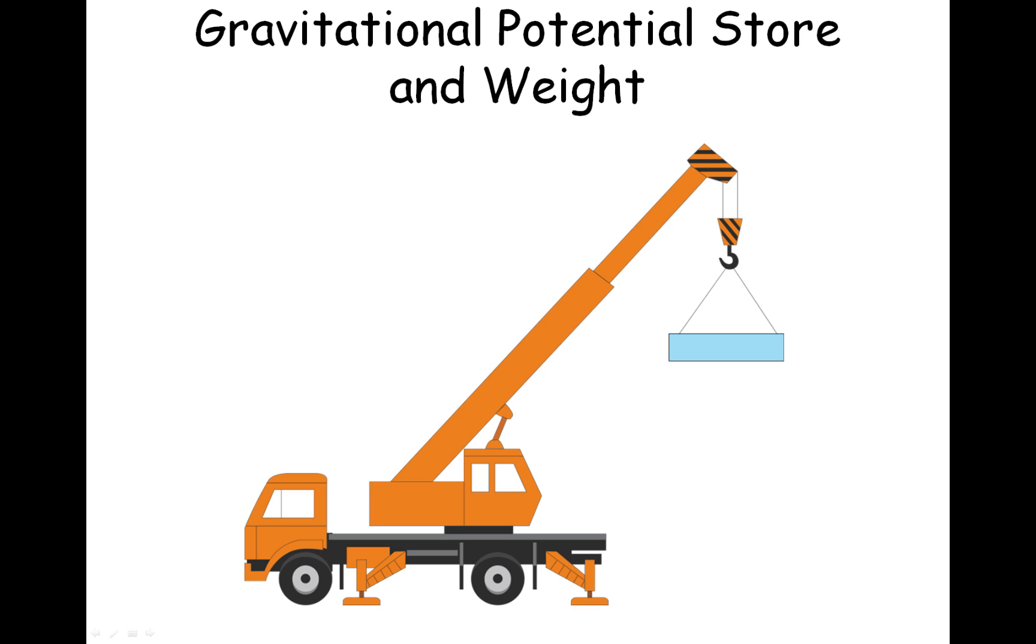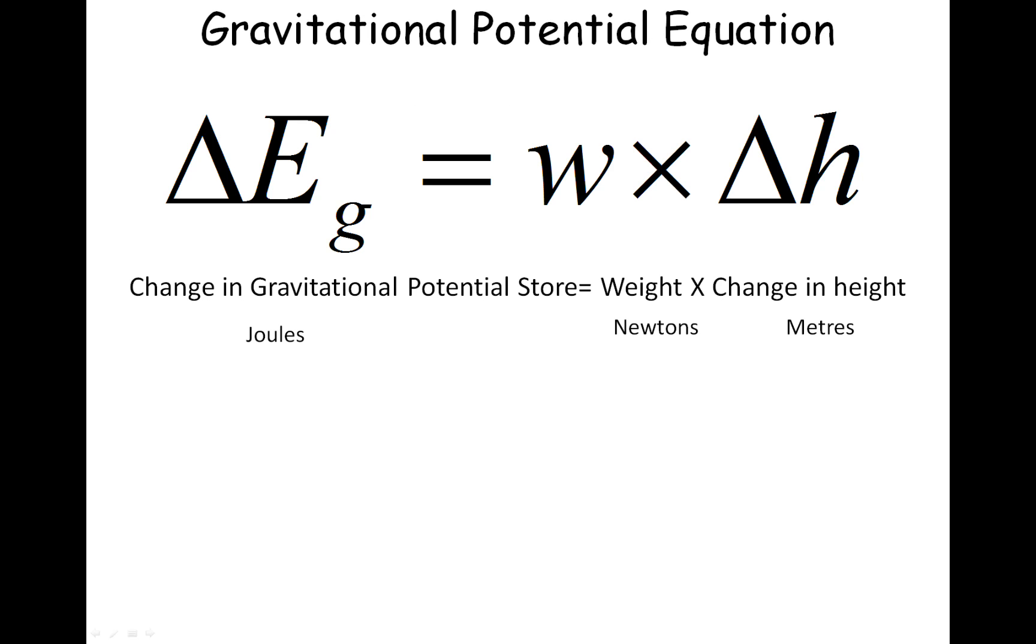So let's start by looking at the equation. On the left hand side we have delta EG, where that triangle symbol is a Greek letter of the alphabet, delta.